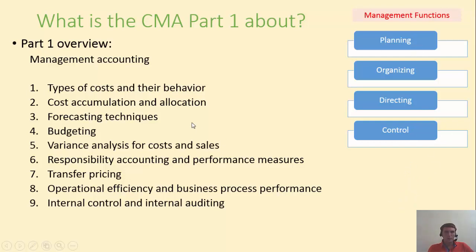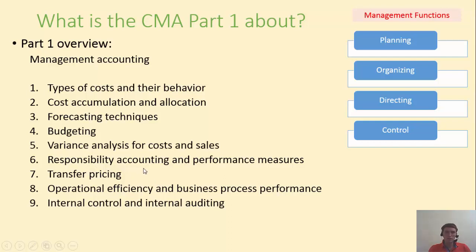These are the topics we're going to cover. Managers care a lot about costs, so we're going to study costs and their behavior, cost accumulation and allocation. We will also study forecasting techniques to project our sales and revenues and develop a budget. Later on, we'll measure actual performance against the budgeted performance — that's variance analysis. And we will attribute variances to different business units based on their financial responsibilities — that's responsibility accounting. We'll also talk about transfer pricing, when a business unit sells to another and has to set a price for the transaction.